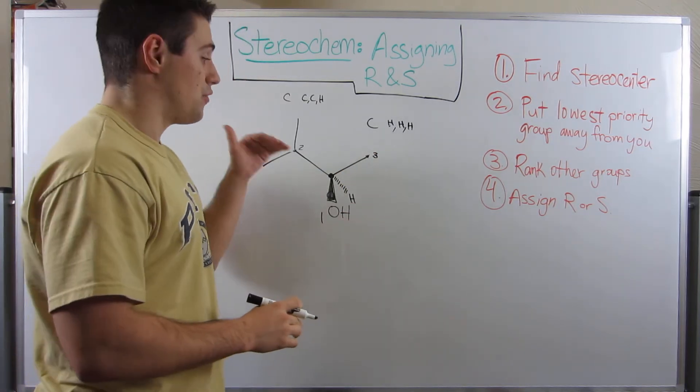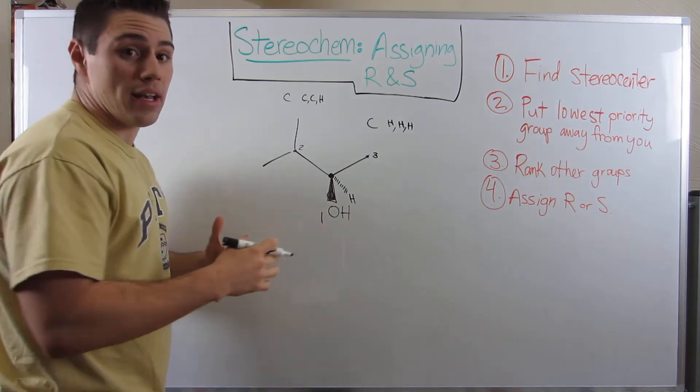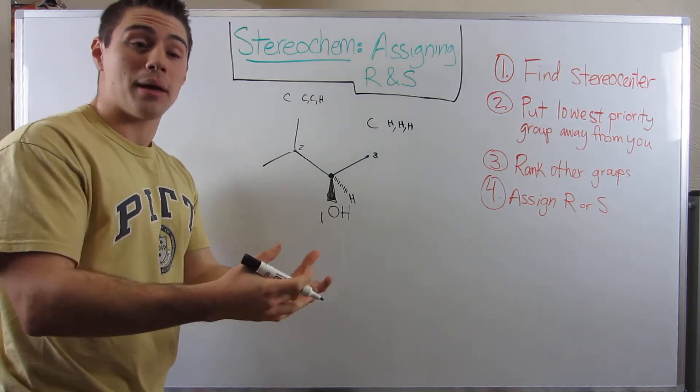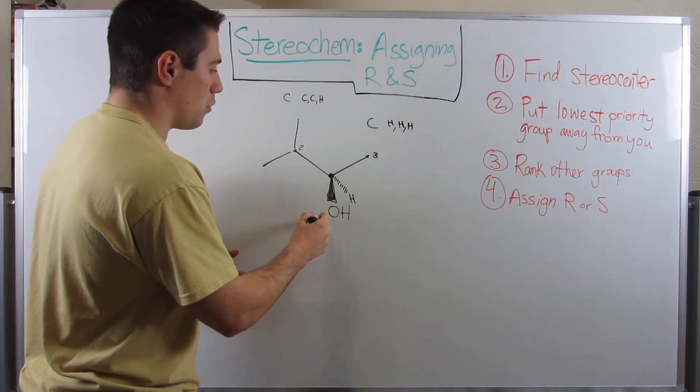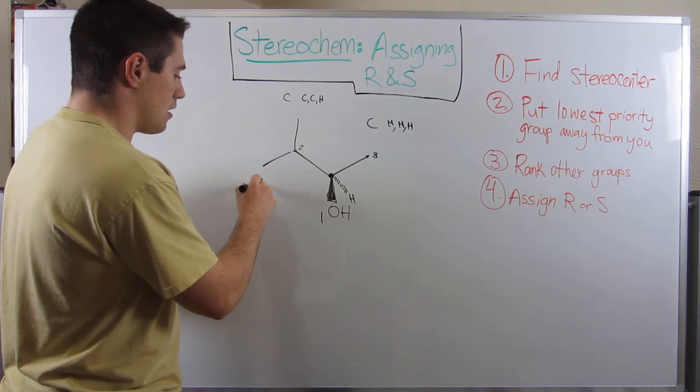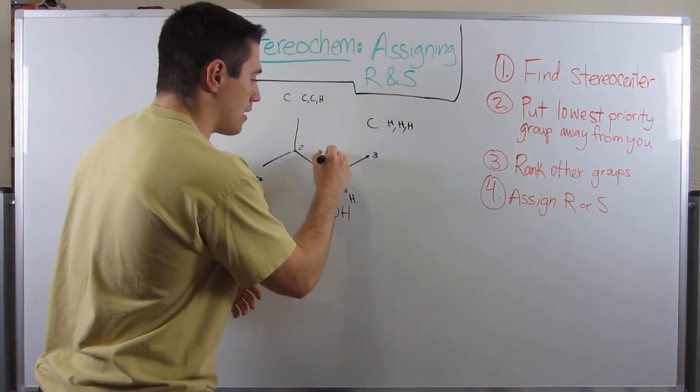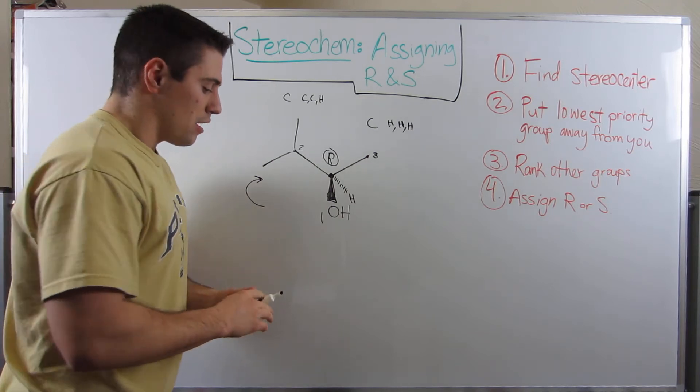And this methyl group over right here is third priority. Our lowest priority group, hydrogen, is facing away from us. So we can go ahead and assign stereochemistry. So it looks like one, two, three to go around like that. We're going this way. So again, it looks like R.